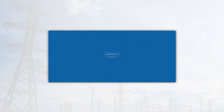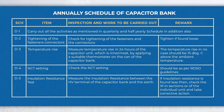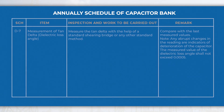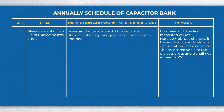In the annual schedule, perform activities like tightening the fasteners and connectors, measuring the insulation resistance and the capacitance value of the individual capacitor units, etc., in addition to half-yearly and quarterly schedule activities.